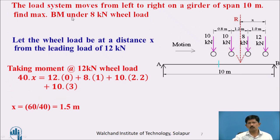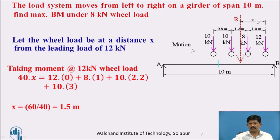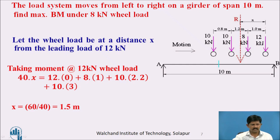Now we will see a problem. A load system moves from left to right on a girder of span 10 meters with given wheel loads, and we have to find out the bending moment under the 8 kN wheel load. First, find the resultant load by taking moment about the 12 kN load. Resultant into x equals 12×0 plus 8×1 plus 10×2.2 plus 10×3, giving x equals 1.5 meters. So the resultant is 1.5 meters away from the 12 kN load.